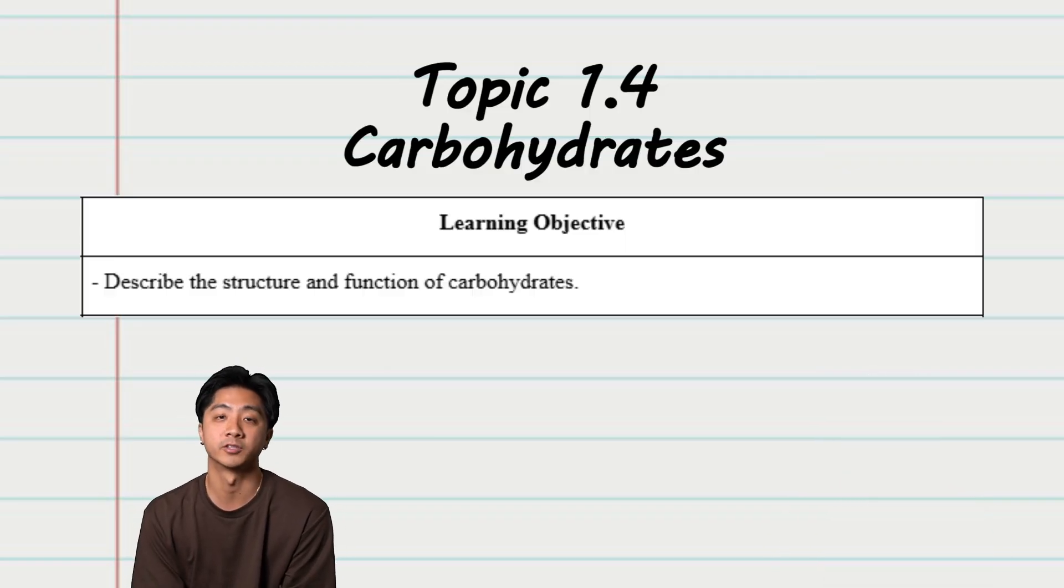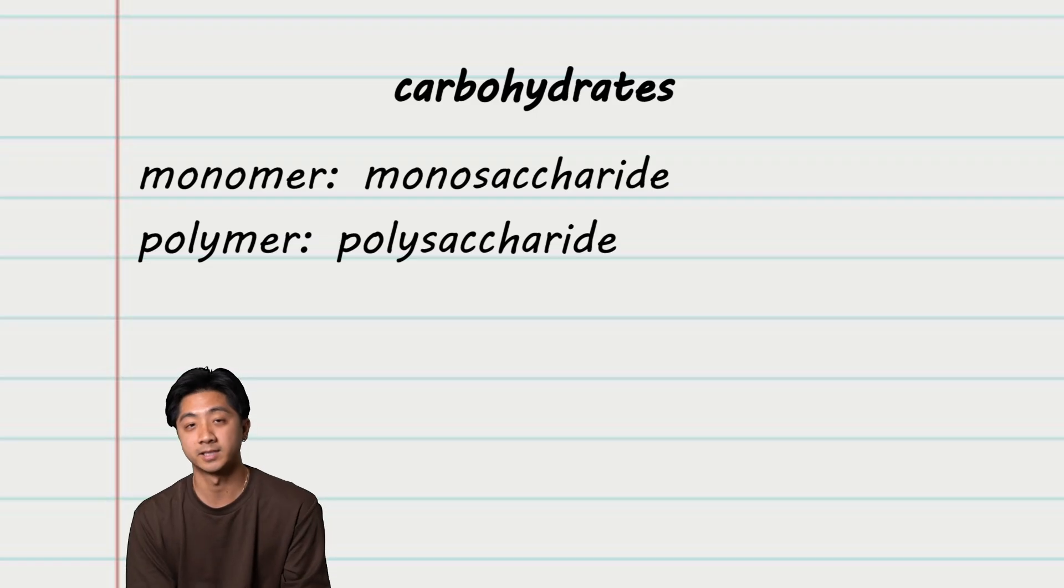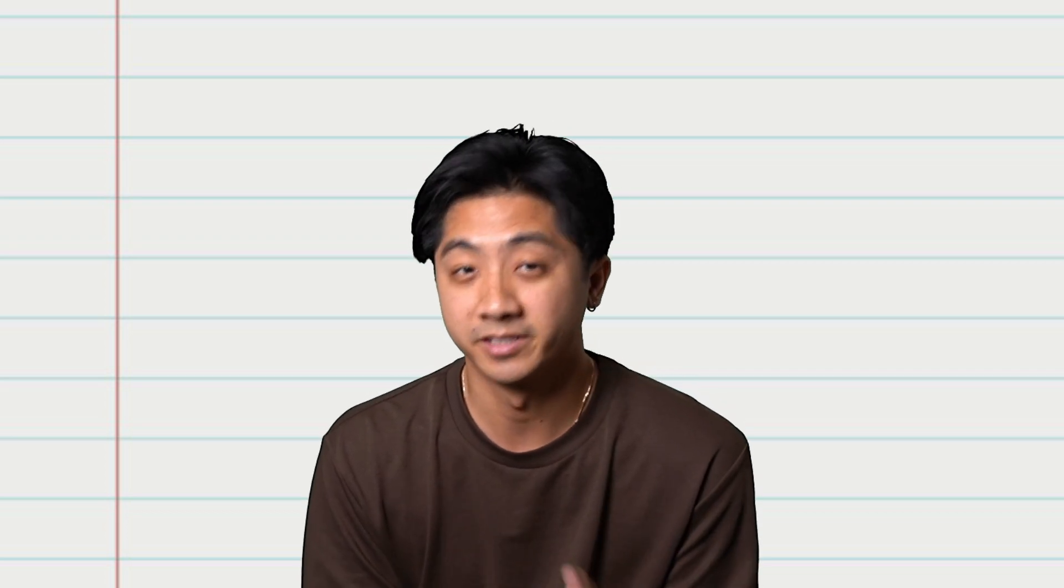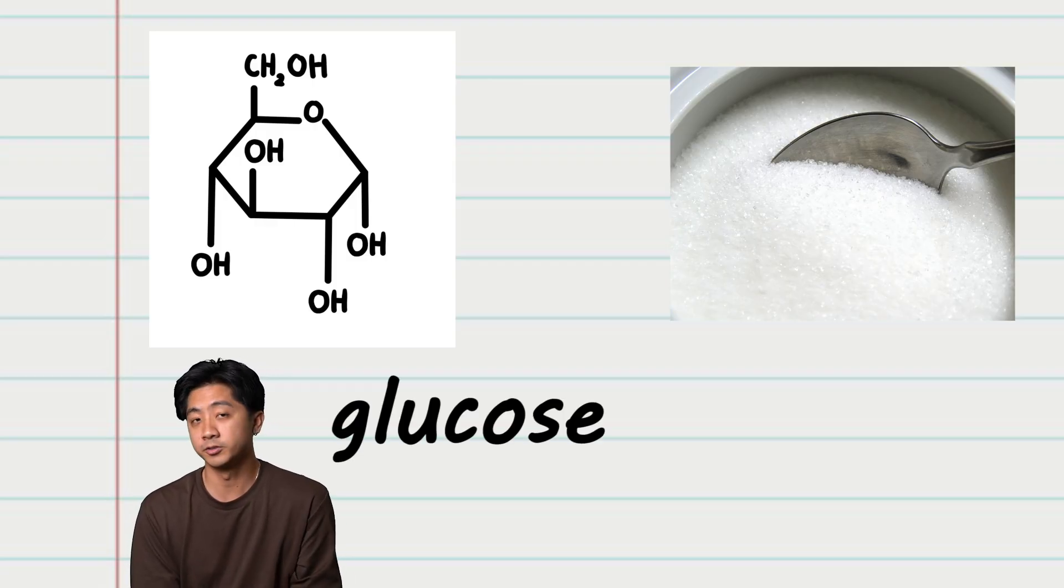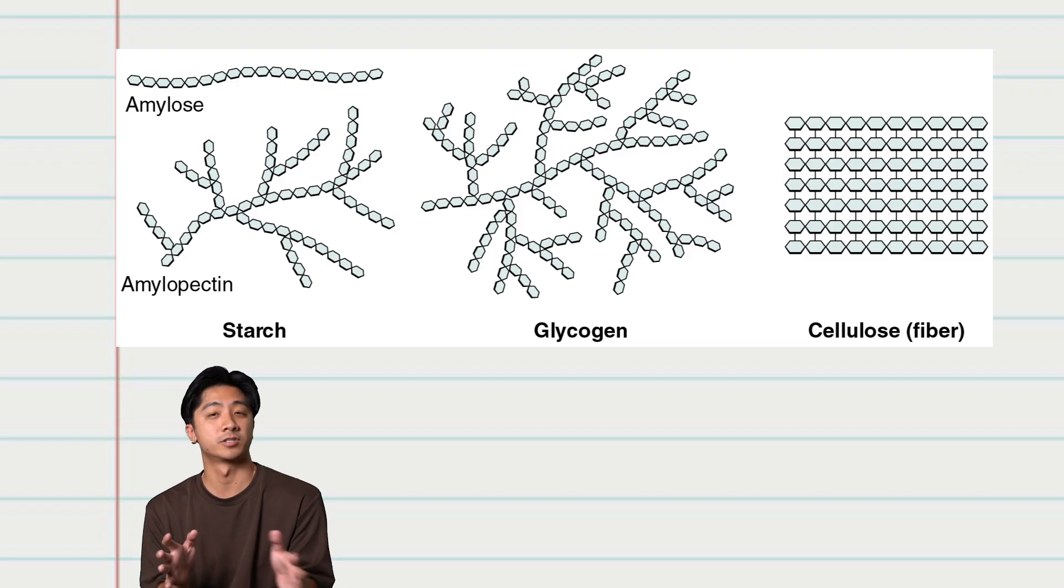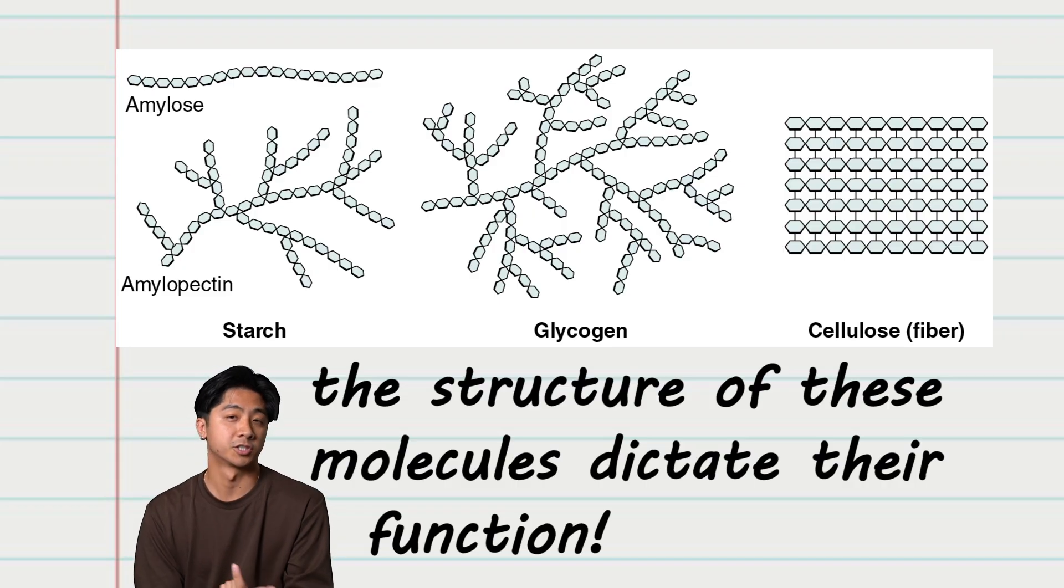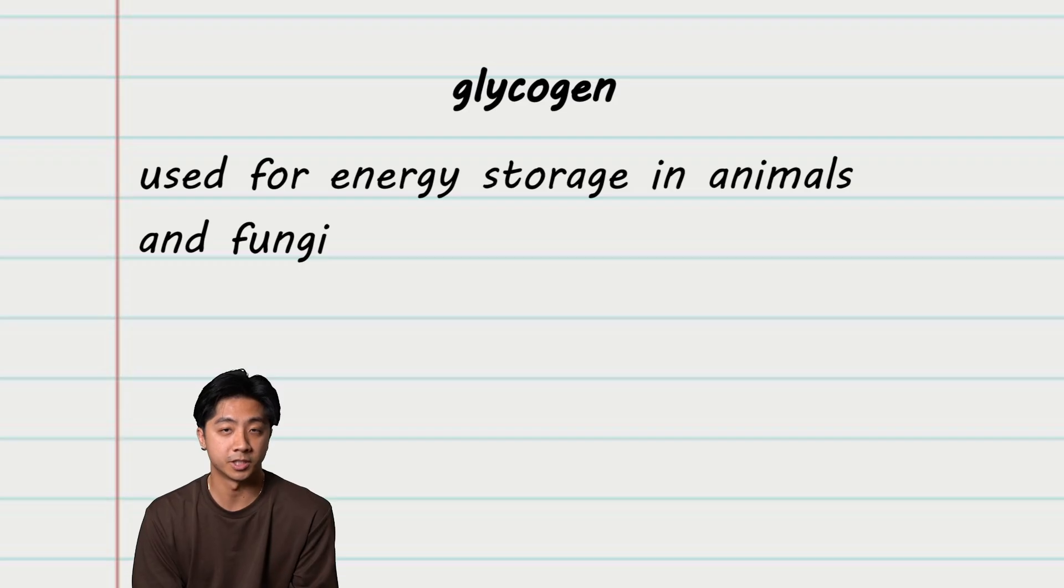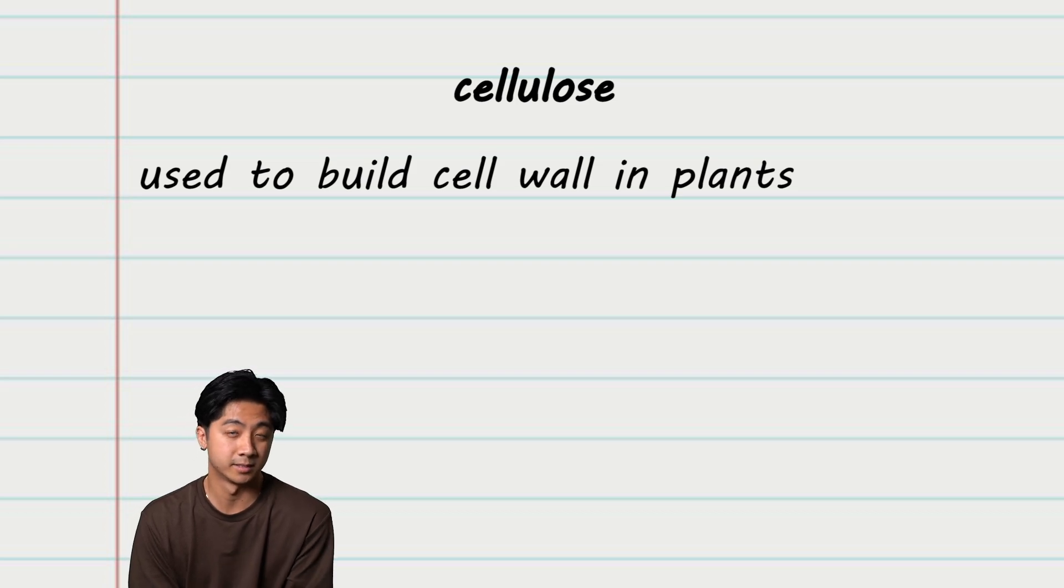Topic 1.4, carbohydrates. The monomer for carbohydrates is a monosaccharide and the polymer is a polysaccharide. Remember, polymers are joined together via covalent bonds using dehydration synthesis. Carbohydrates are also known as sugars. Smaller, simple sugars like glucose are used for quick energy. But you can take these sugars and form large complex molecules or polymers, and these can form linear or branched structures. According to the Unit 1 standards, the three examples that you need to know are glycogen, starch, and cellulose. Glycogen is used for energy storage in animals and fungi. Starch is used for energy storage in plants. And cellulose is used by plants to build their cell wall.